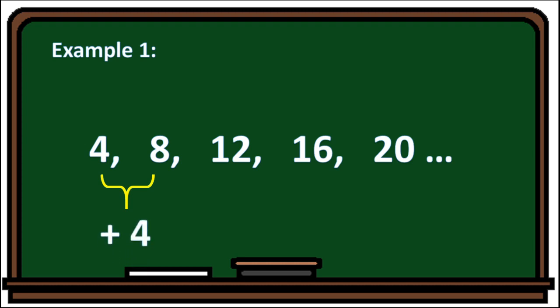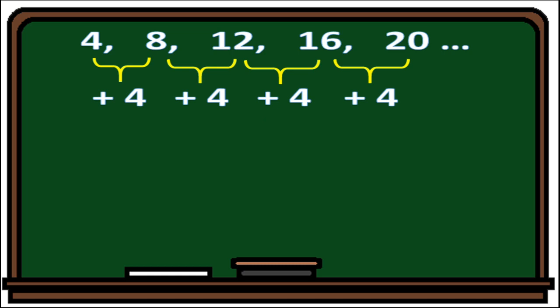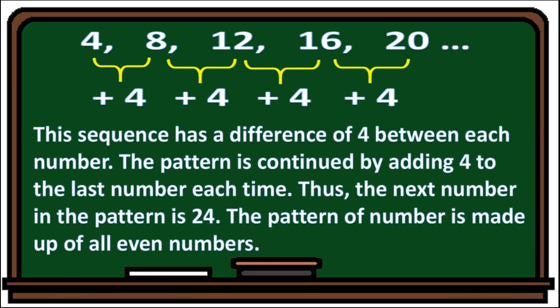From 4 to 8, it is plus 4. From 8 to 12, it is also plus 4. From 12 to 16 is plus 4. And 16 to 20 is plus 4. So the pattern in this example is plus 4. This sequence has a difference of 4 between each number. The pattern is continued by adding 4 to the last number each time. Thus, the next number in the pattern is 24.